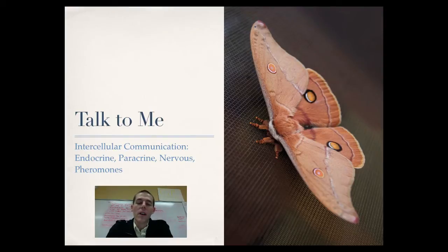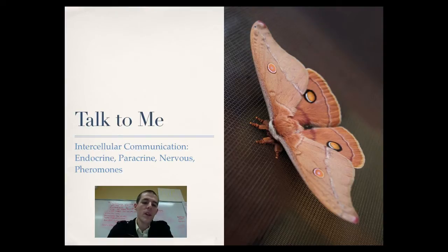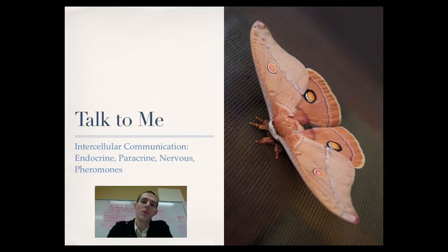Before we talk specifically about hormones, I just want to quickly brush over different types of intercellular communication — communication from one cell to the other. Endocrine signaling uses hormones traveling long distances through the bloodstream. You have paracrine and autocrine signaling, where a cell releases chemicals that diffuse to the cells right around it, not necessarily traveling through the bloodstream. You've got nervous signaling, which uses neurons and synapses and neurotransmitters. And you've got pheromones, which are signals sent out into the air from one organism to the next. A perfect example is moths, which secrete pheromones that can travel for miles, attracting mates.